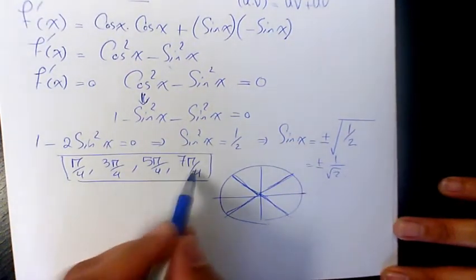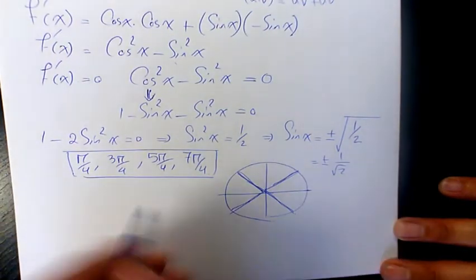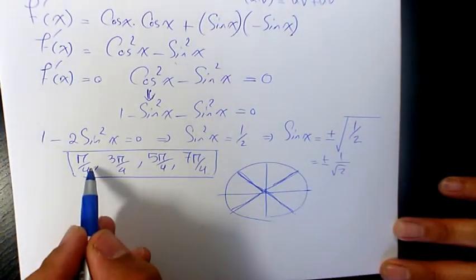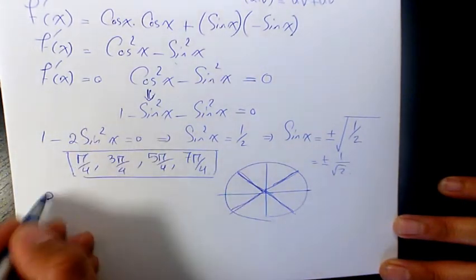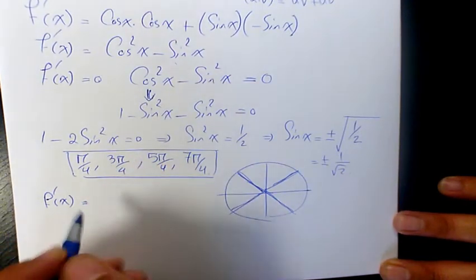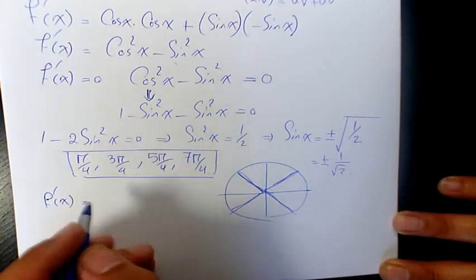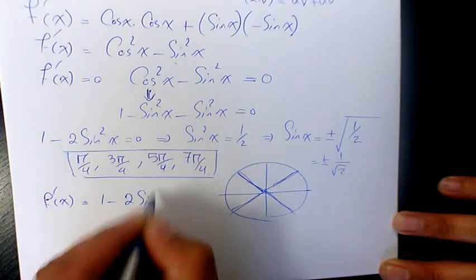Now we need to figure out where f'(x) is positive or negative. Remember that f'(x) = 1 - 2sin²(x).